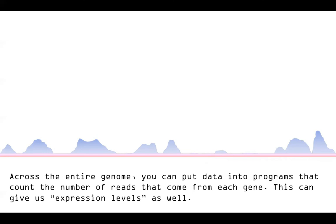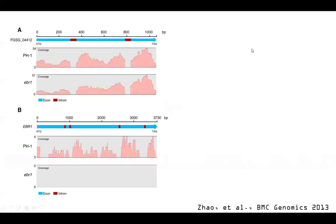Let's take a second to look at some real data, the kind that can be published from this. Here are some example genes with annotated exons and introns. You can see the coverage — the number of reads — mapping back to them. You can see exon, exon, exon, and a huge steep dip where there's an intron, because that was spliced out before it ever got to the point where we were sequencing it. Similarly here, you can see exactly the evidence of that intron being spliced out in both scenarios.